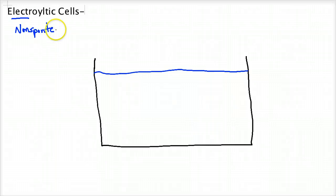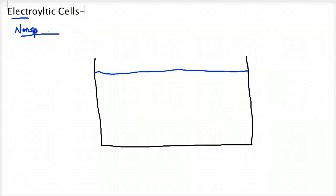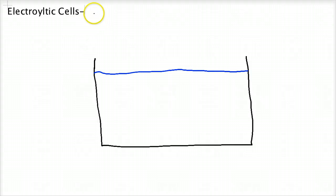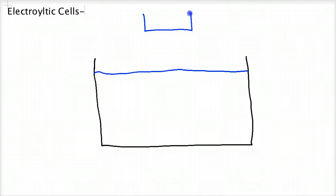Being non-spontaneous means that they require energy. Now, requiring energy to force a redox reaction that's non-spontaneous usually means that we're going to use a voltaic cell to drive this process. So we're going to draw a voltaic cell or a battery up here. I'm going to draw two terminals here, or electrodes. This is my battery, my voltaic cell.